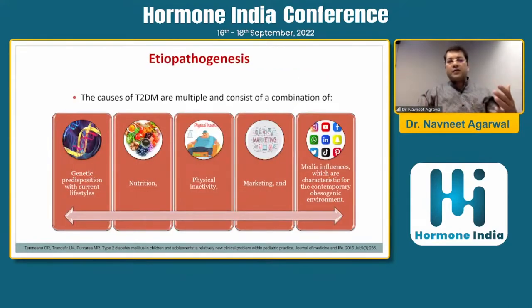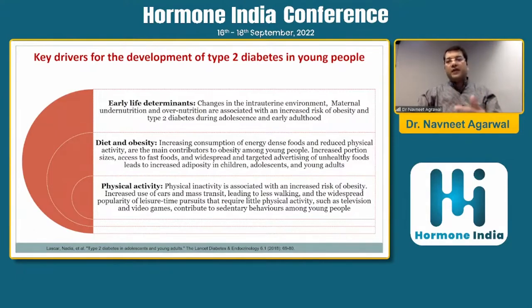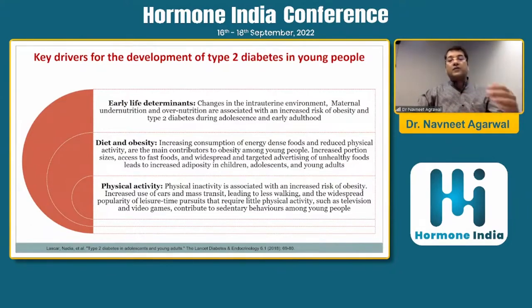The etiopathogenesis is the same as that responsible for diabetes in the elderly population — the pathogenesis is almost the same. But there are some key drivers for development of type 2 diabetes in the young. One is early life determinants like changes in the intrauterine environment, maternal undernutrition and overnutrition. Diet, increasing consumption of energy-dense foods, and reduced physical activity — children are more on mobile devices, apps, and computers — leads to lack of physical activity, weight gain, visceral fat accumulation, insulin resistance, and ultimately type 2 diabetes.